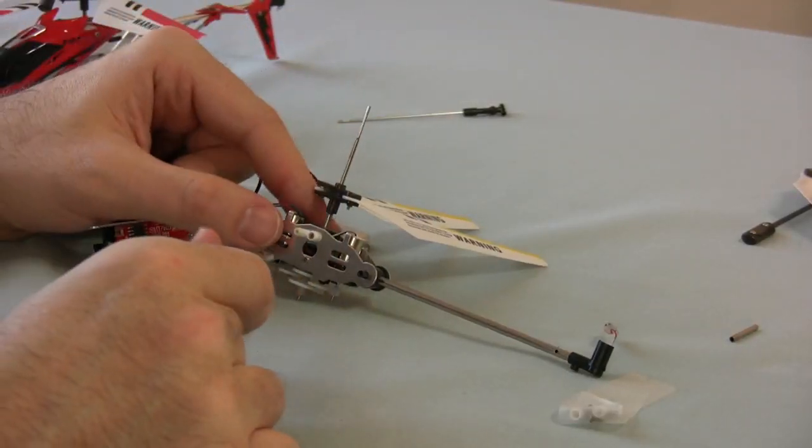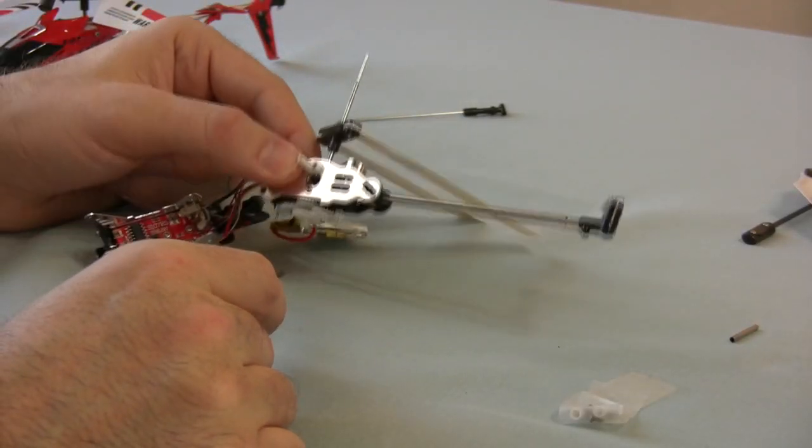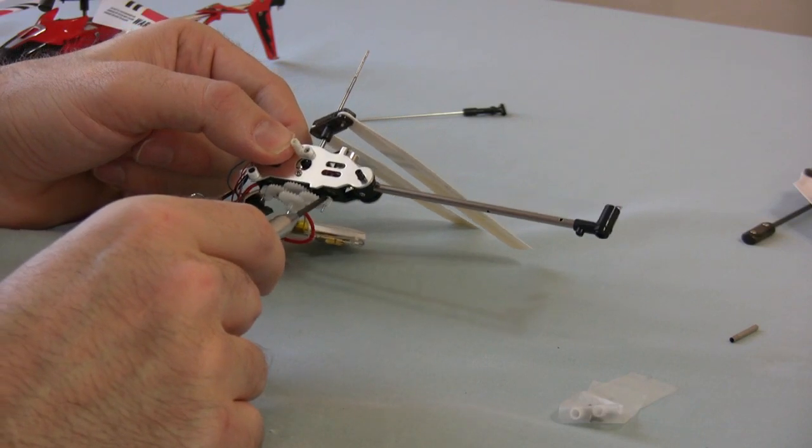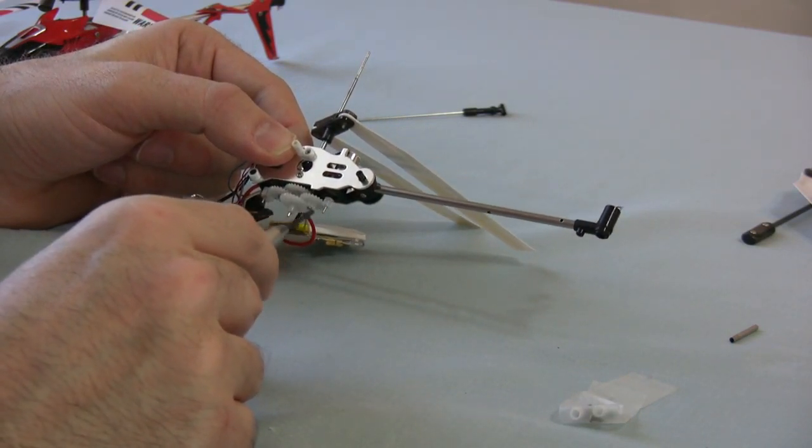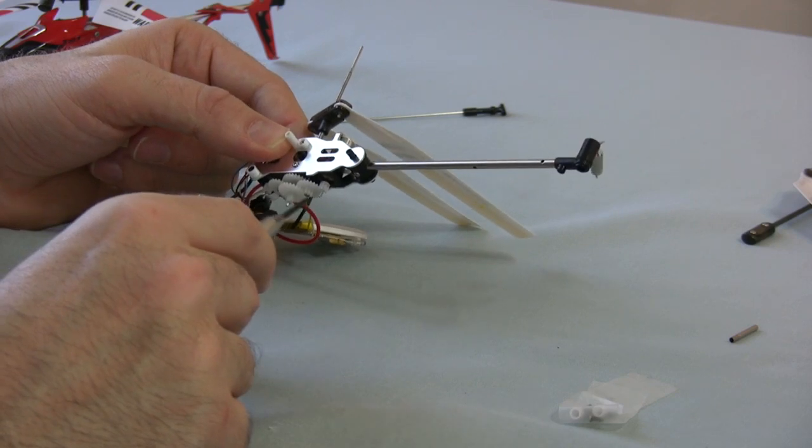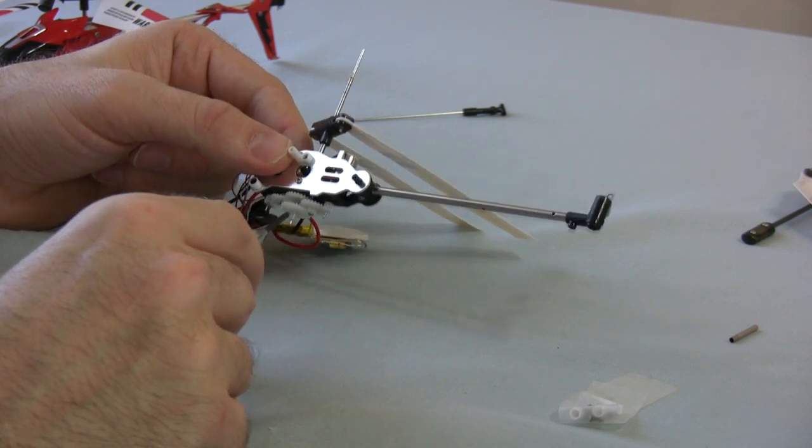Now you see here what we've got is some gears down here. All these gears sometimes tend to strip and they can be hard to get in and out.